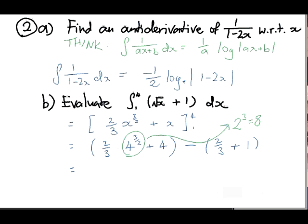So that's 2 thirds times 8, is 16 on 3, plus 4, is 12 on 3, minus 2 thirds, minus 3 thirds. Right? And we can all put this together. You'll see that 16 plus 12, minus 2, minus 3, will give you 23. So, 23 on 3, is your final answer for 2B. Awesome. On to question 3.